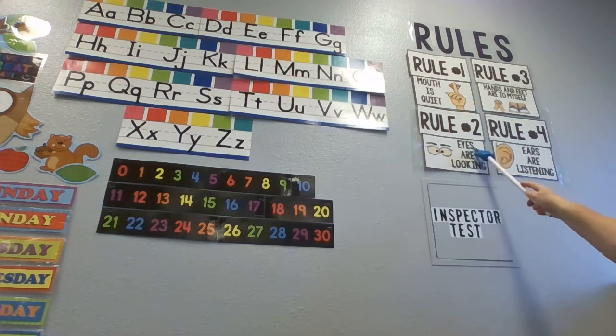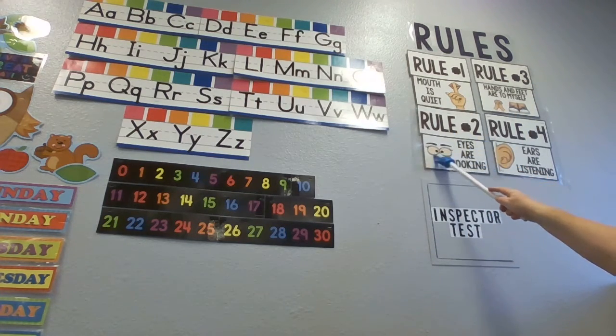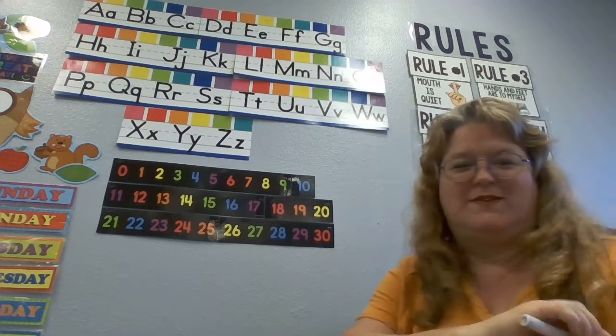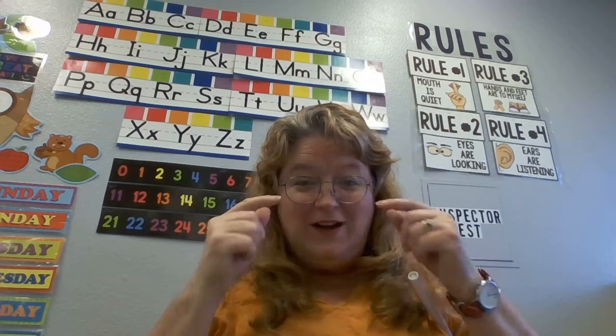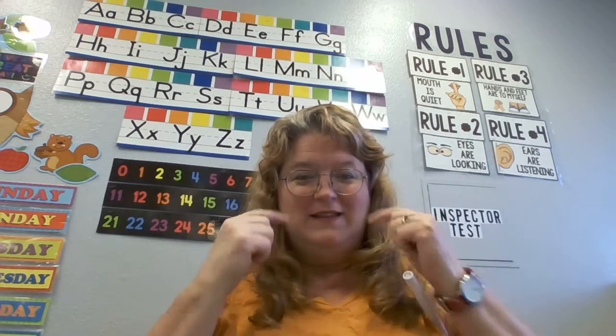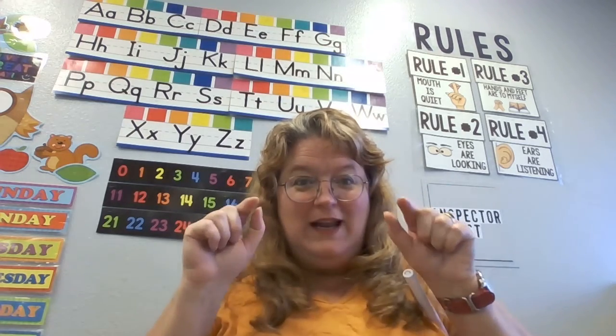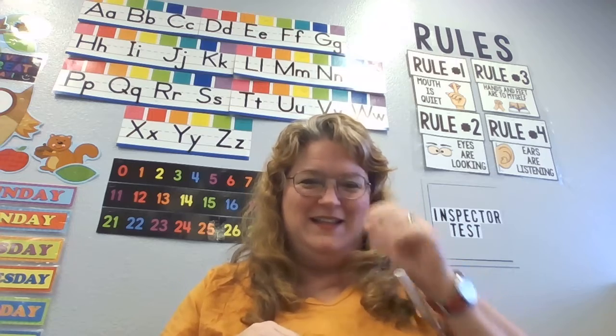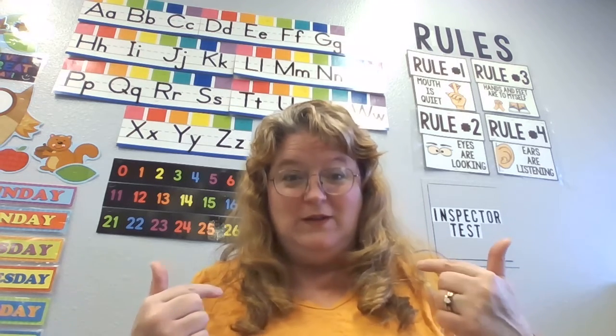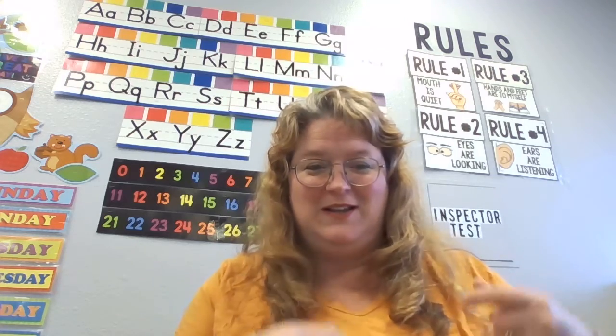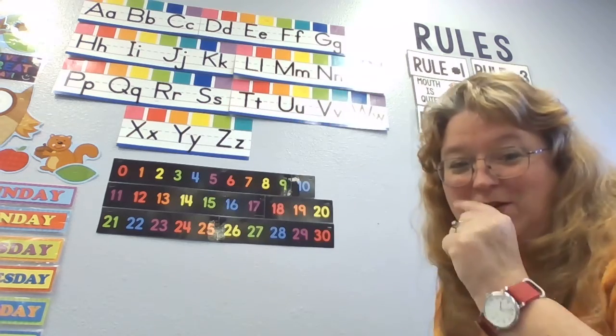Rule number two. Eyes are looking. There's some eyeballs. So that means your eyes, your eyes are looking at me. And my eyes will be looking at you. It helps very much for you to learn if you are looking at me while I'm talking. And if you're quiet.